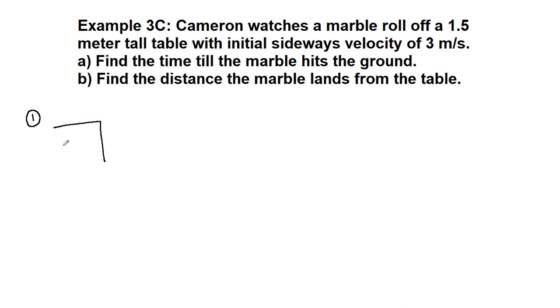Cameron watches a marble roll off a 1.5 meter tall table, so we can draw the table, with initial sideways velocity of 3 meters per second. Now this is extremely important. In the lecture video for the start of Chapter 3, and in the previous problem, I made the comment that in our notes, we really should have the statement, when we see a vector at an angle, we break it up into components.